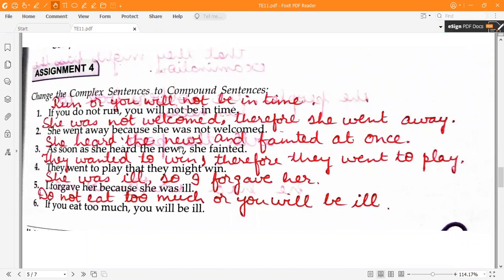Fourth one, they went to play that they might win. They wanted to win, therefore they went to play. Fifth one, I forgave her because she was ill. She was ill, so I forgave her.